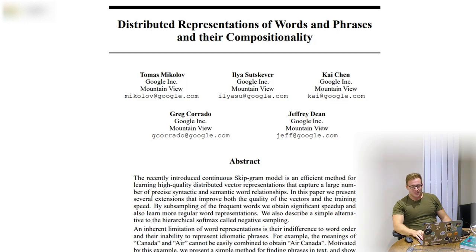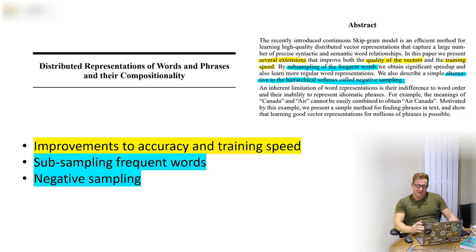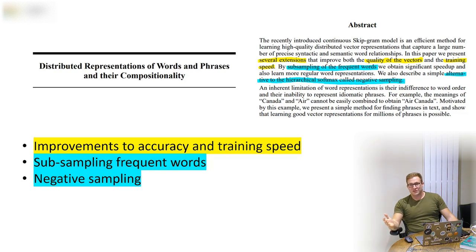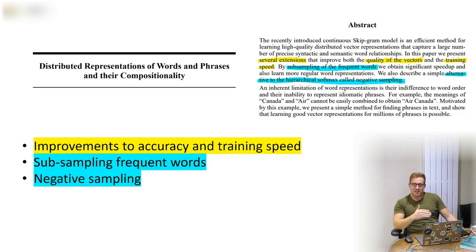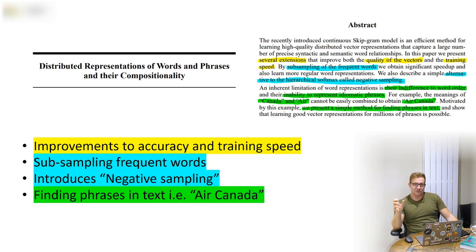The second paper improves on the SkipGram model in a couple of ways. It uses tricks like subsampling frequent words and negative sampling — which is incredibly powerful, transforming the neural network architecture into a classification problem. It's a trick we see all over the place, similar to the triplet architecture from the deep ranking and FaceNet papers. It also introduces the concept of phrases — so rather than treating 'Air Canada' or 'Barack Obama' as two separate words, it learns these phrases and treats them as one token.